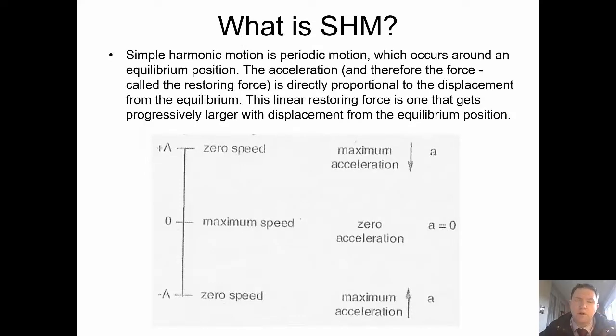Well, simple harmonic motion is periodic motion. So periodic means in the same period. So it takes the same amount of time to repeat the motion endlessly. Repetitive motion that occurs with the same amount of time, which occurs around an equilibrium position. The acceleration and therefore the force called the restoring force, because it's always towards the center, is directly proportional to the displacement. The linear restoring force is one that gets progressively larger with displacement. Maximum acceleration at every end is zero in the middle, and maximum speed in the middle and zero speed on the outside.